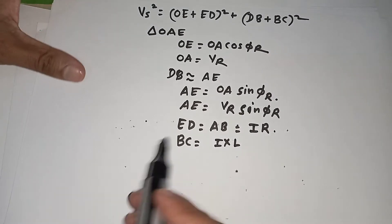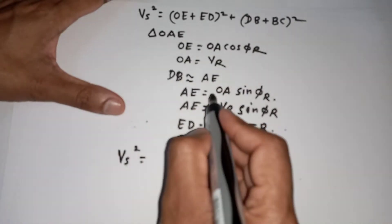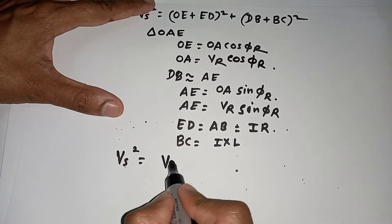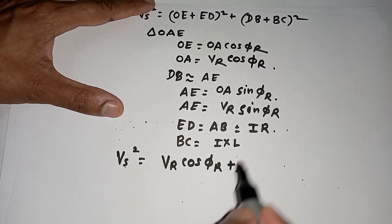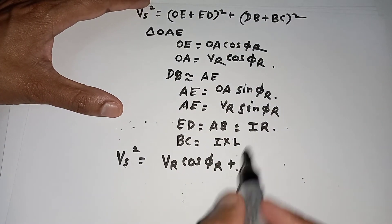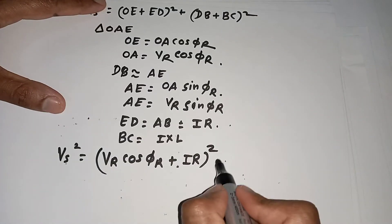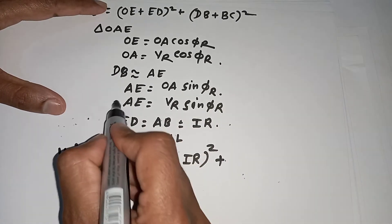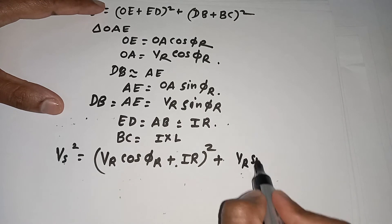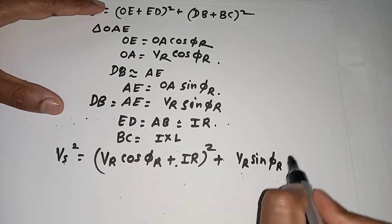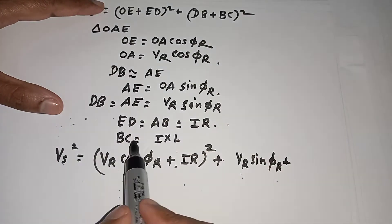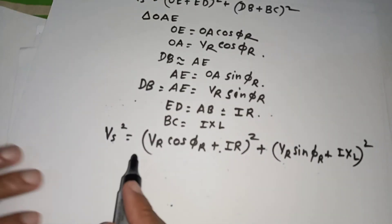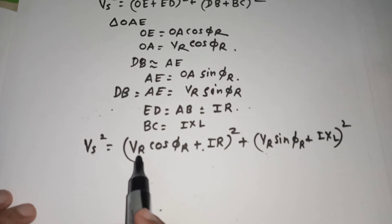So the sending-end voltage expression is: VS² = (VR·cos(phi_R) + I·R)² + (VR·sin(phi_R) + I·XL)². This expresses the sending-end voltage in terms of receiving-end voltage, current, resistance, and reactance. This completes the expression for sending-end voltage.